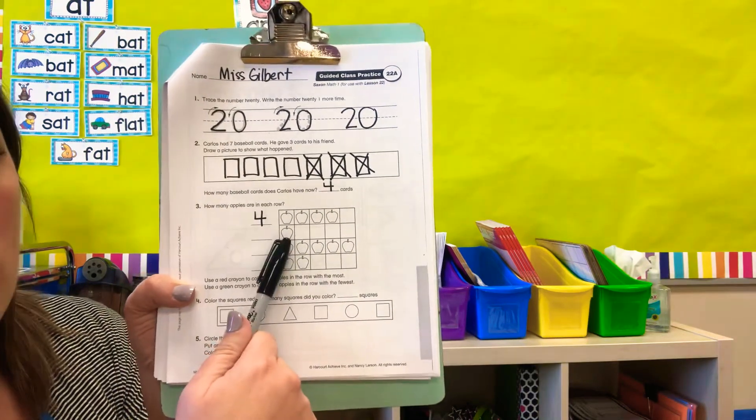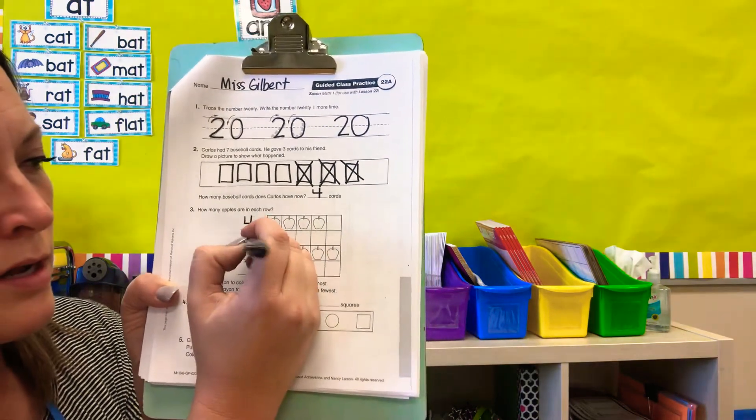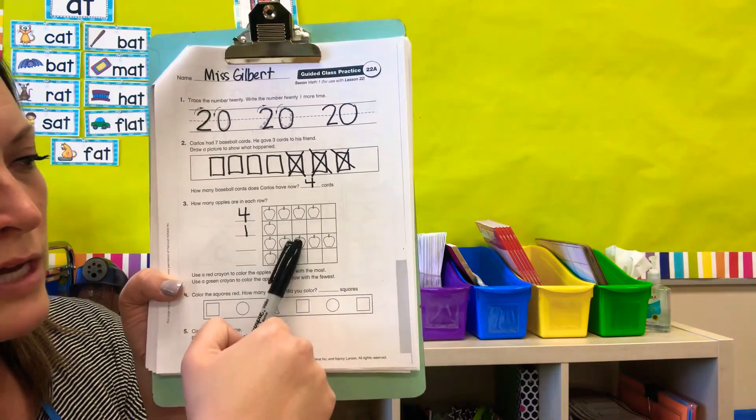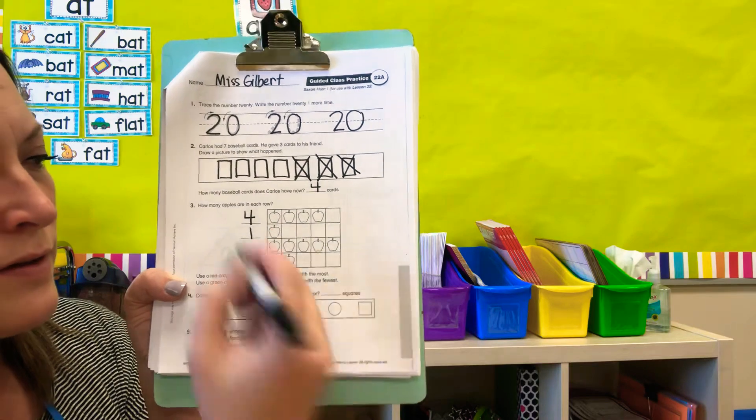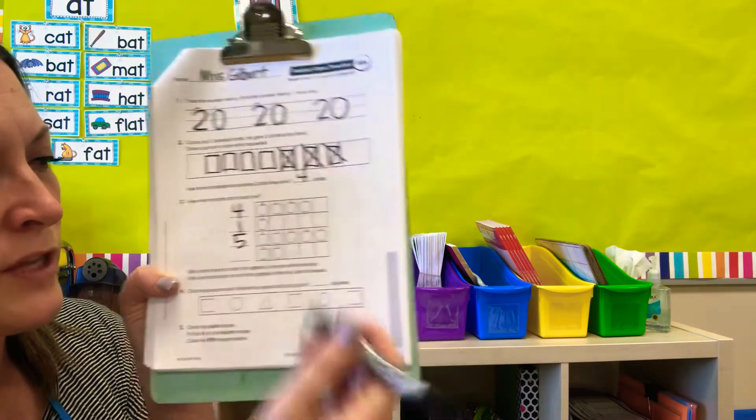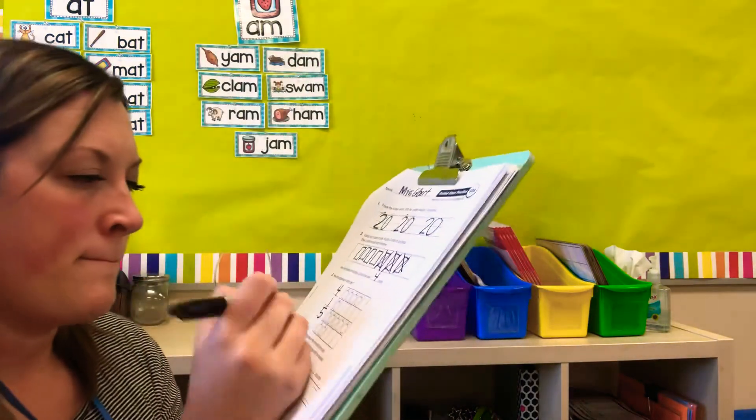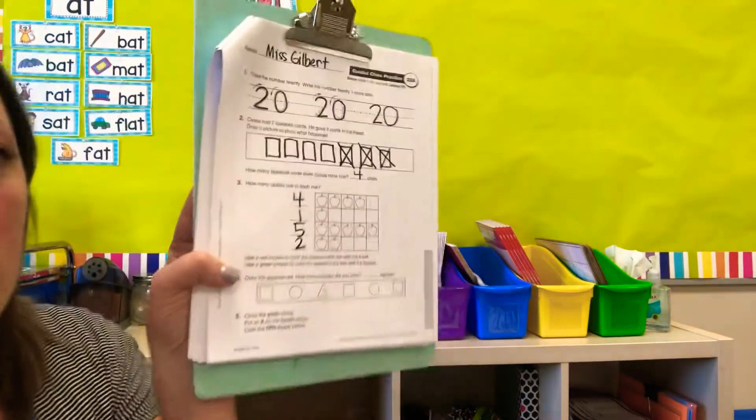How many apples in the third row? One, two, three, four, five. You can do the last row. Two.